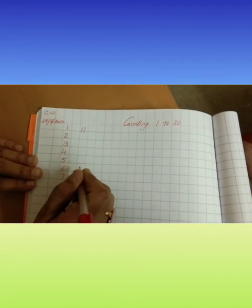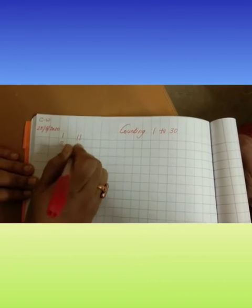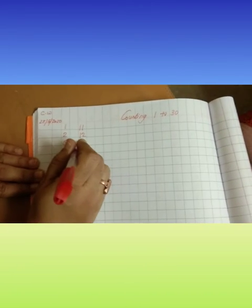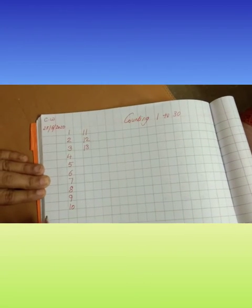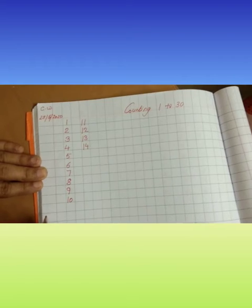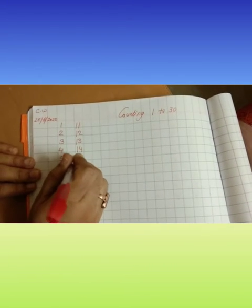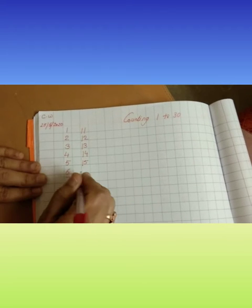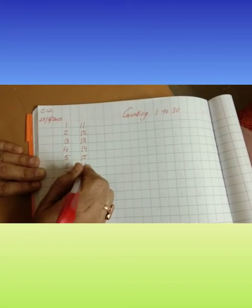And remember one thing. You have to leave 1 line or skip this line. Ok. Then next 1 and 1, 1, 1, 11. 1 and 2, 1, 2, 12. 1 and 3, 1, 3, 13. 1 and 4, 1, 4, 14. 1 and 5, 1, 5, 15.